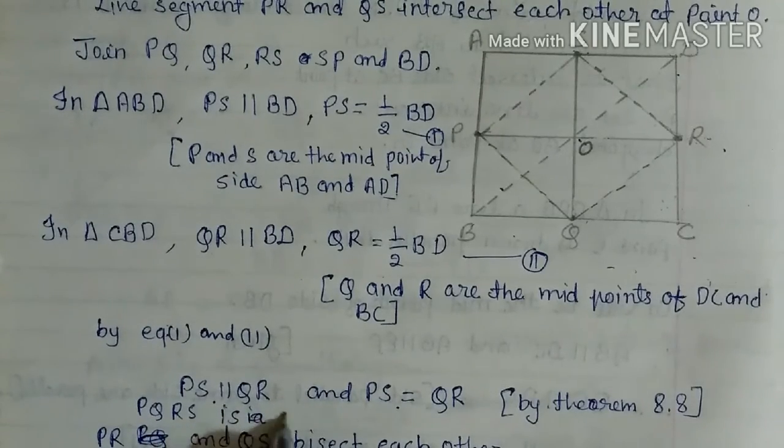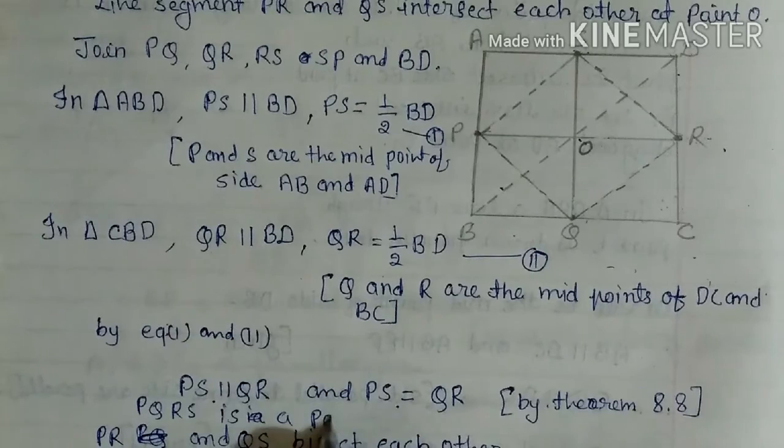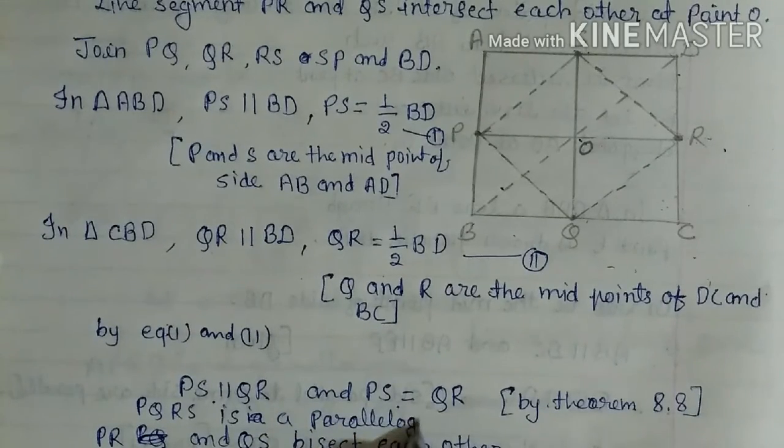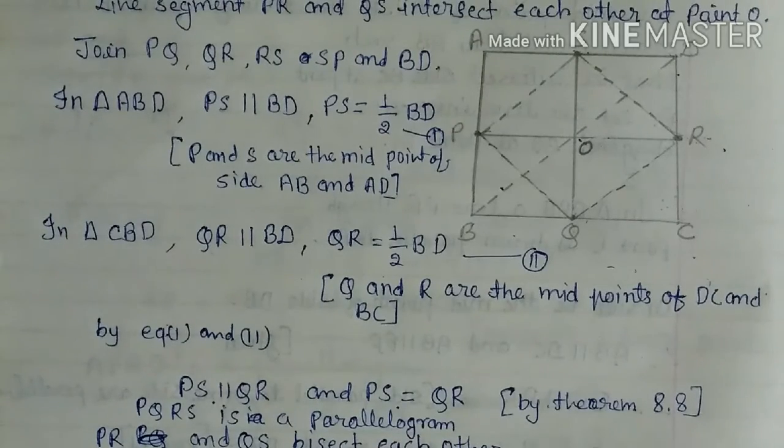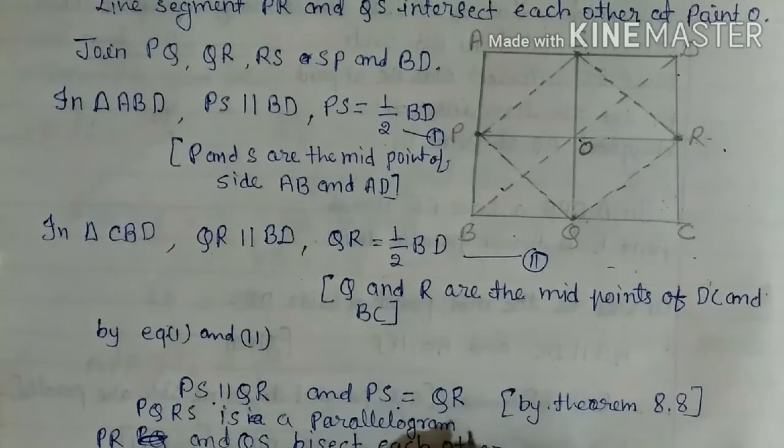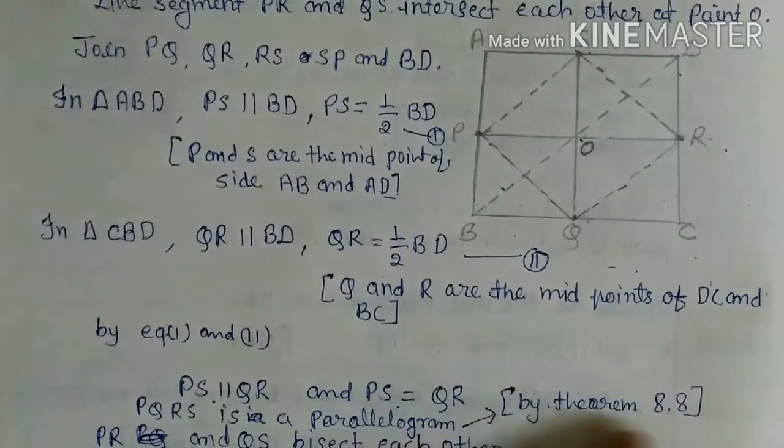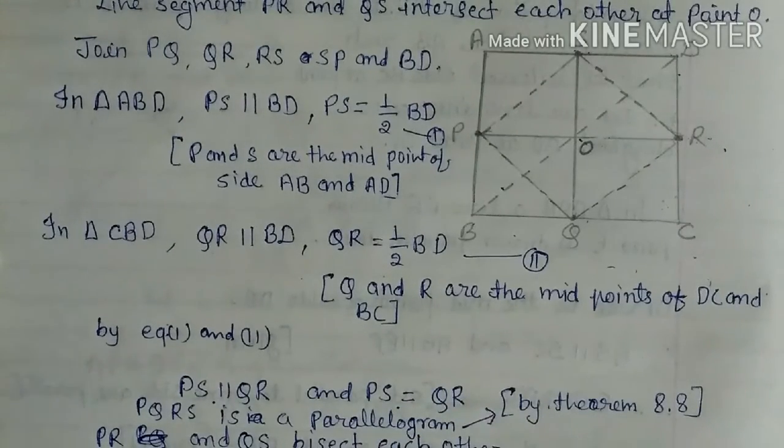PQRS is a parallelogram. We have already studied this: if two sides are parallel and both are equal, then what will it be? A parallelogram by theorem 8.8. Now when this is a parallelogram, then its diagonals will also intersect and bisect each other.